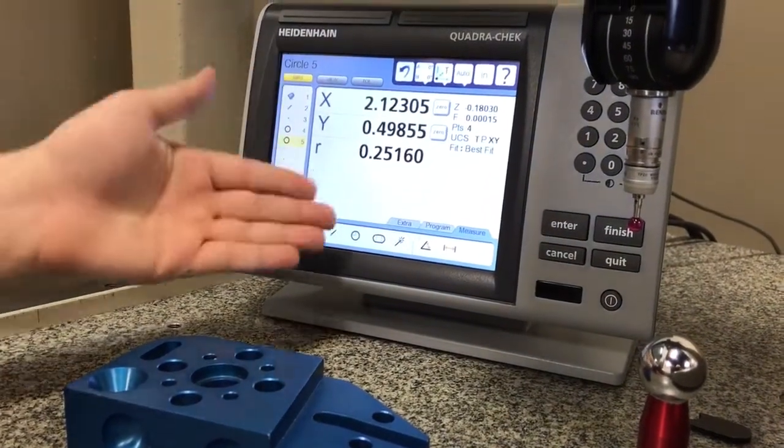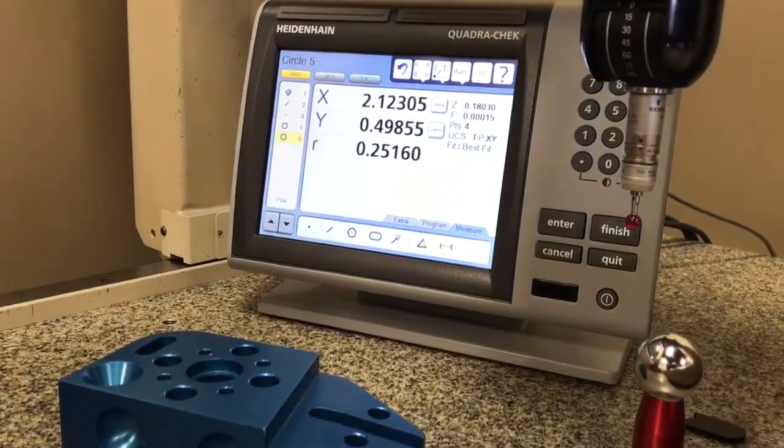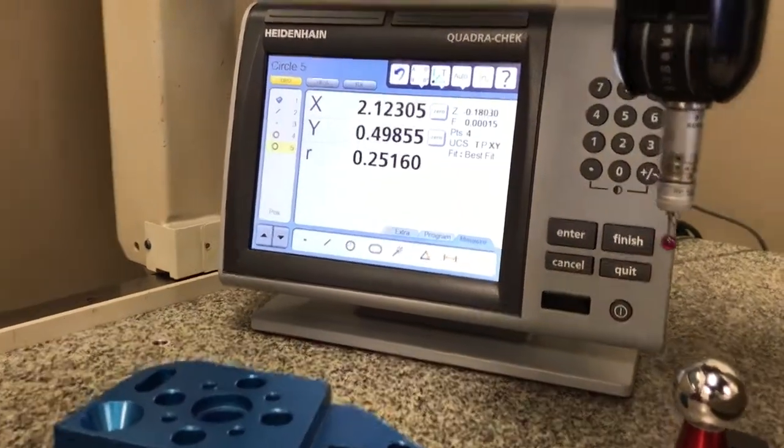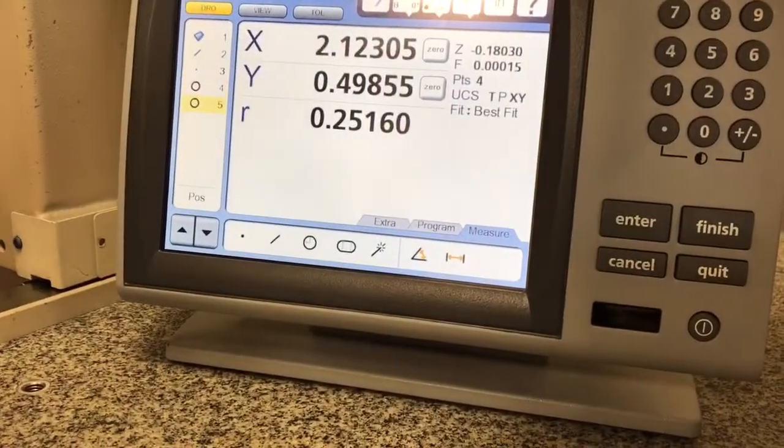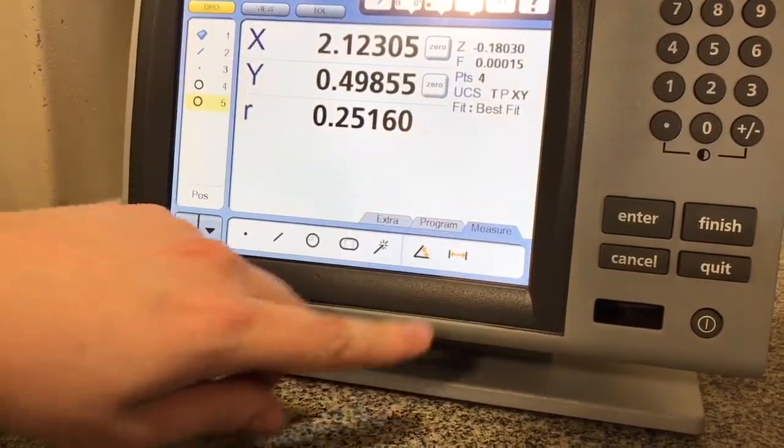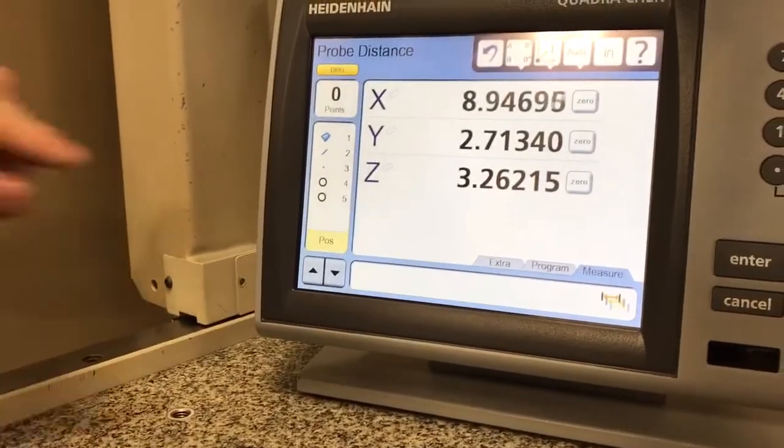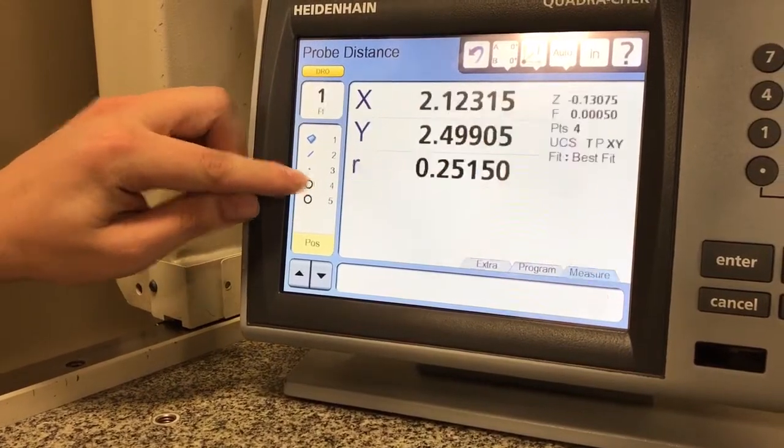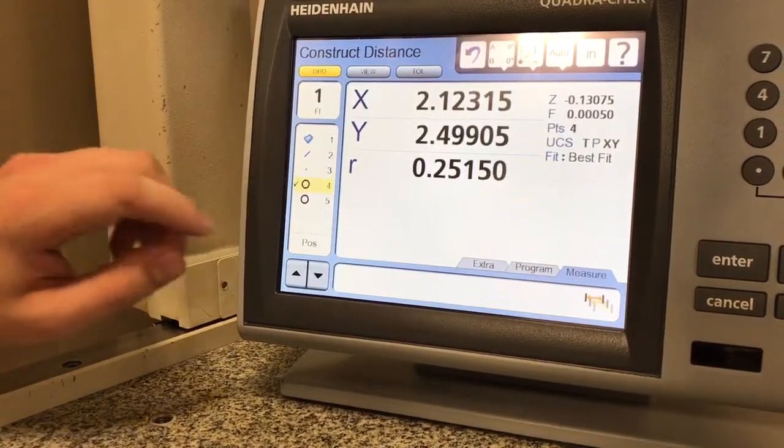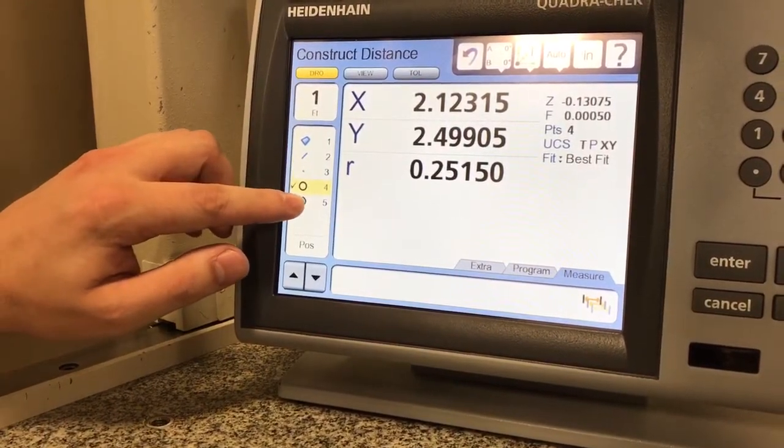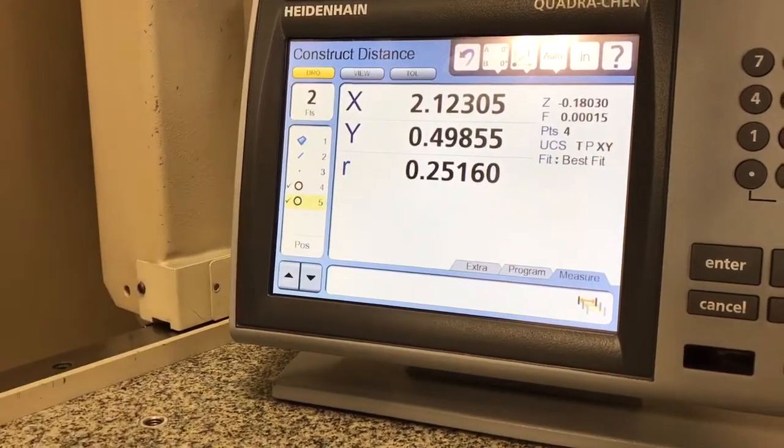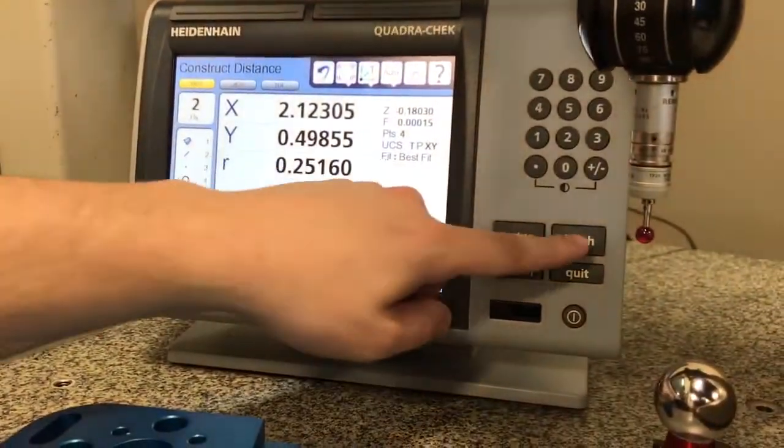It pops up the dimensions there. Now let's say if I want to do a distance between those two circles that I just measured. I'm going to click on the dimension button, then simply press this circle and you'll see a check mark pop up, and do it again on the other circle. You notice another check mark pops up, then press finish.